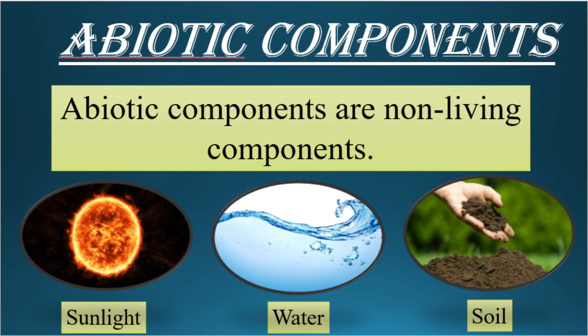Now let's talk about the abiotic components. Abiotic components are non-living components. Look at the word abiotic — 'a' means absent and 'bio' means life, so here we are talking about things that do not have life, that are non-living components. For example, water, air, sunlight, soil, temperature, and humidity — all these are abiotic components. Both abiotic and biotic components are important for the ecosystem.